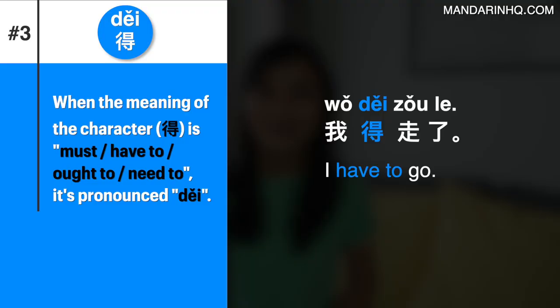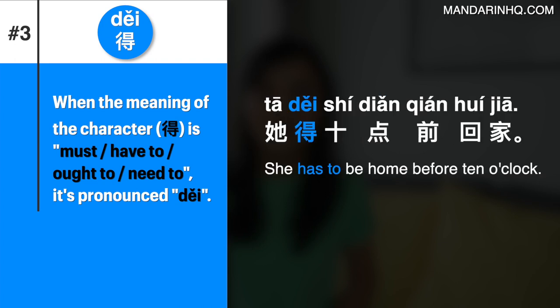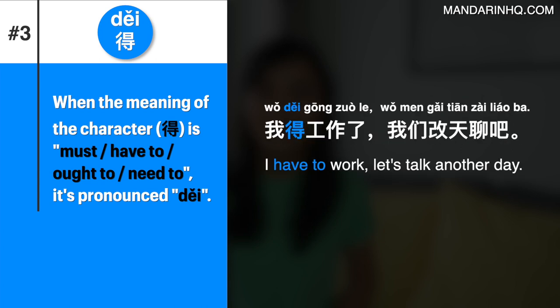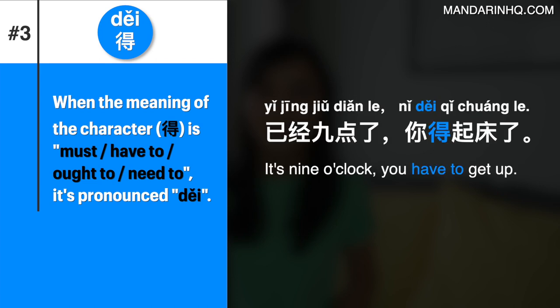我得走了 — I have to go. 她得十点前回家 — She has to be home before 10 o'clock. 我得工作了，我们改天再聊吧 — I have to work; let's talk another day. 已经九点了，你得起床了 — It's nine o'clock; you have to get up.